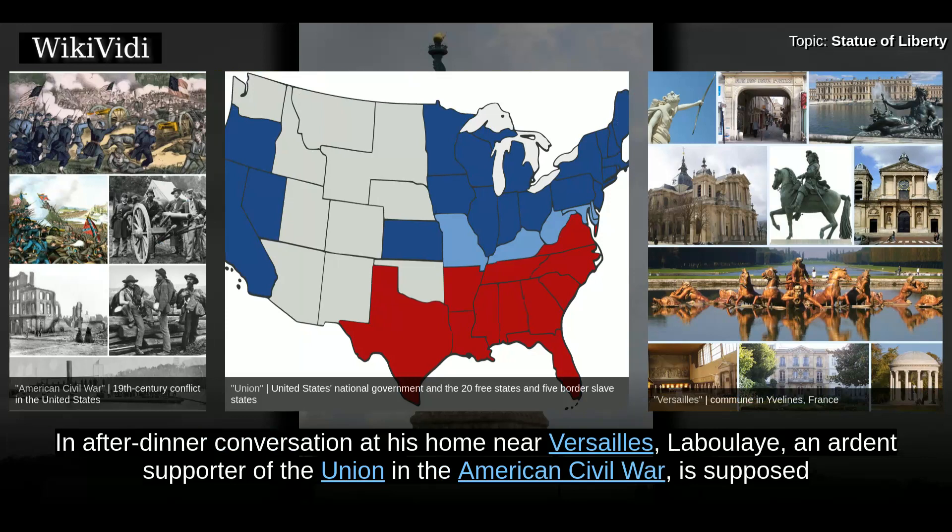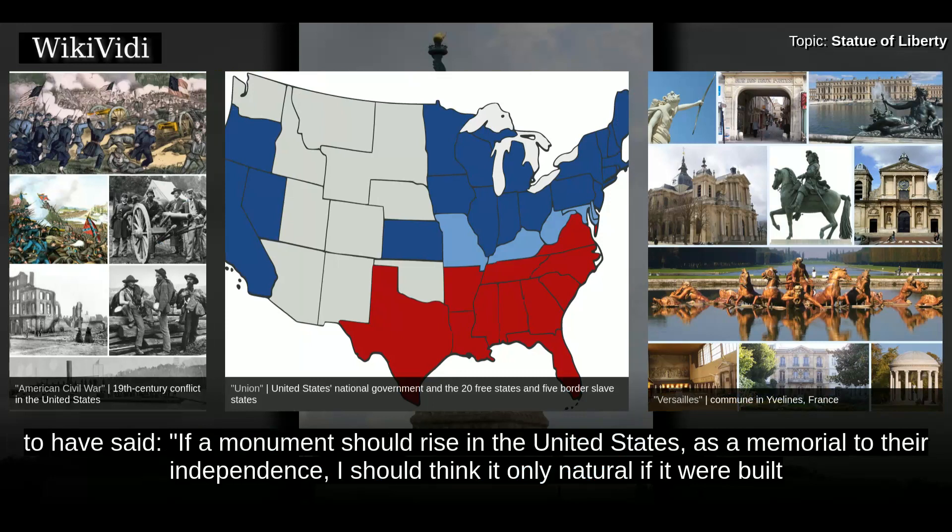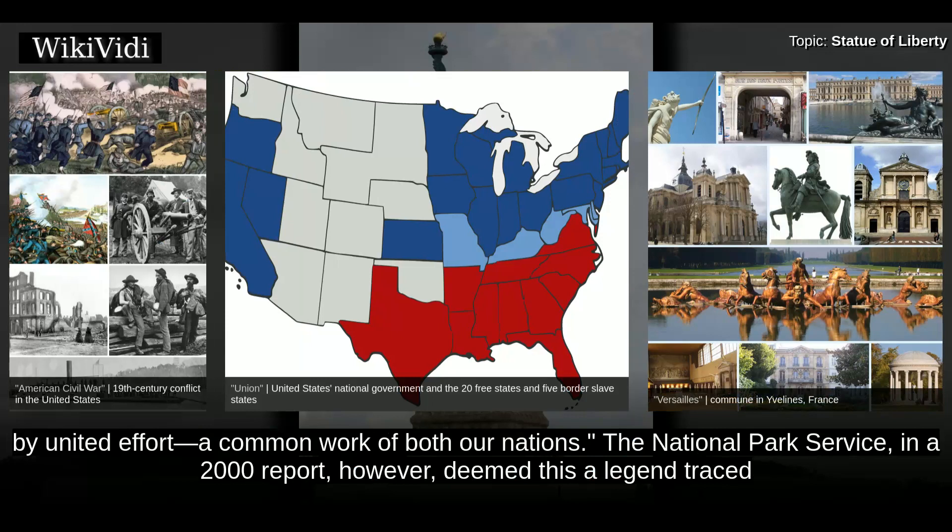In after-dinner conversation at his home near Versailles, Laboulaye, an ardent supporter of the Union in the American Civil War, is supposed to have said: 'If a monument should rise in the United States as a memorial to their independence, I should think it only natural if it were built by united effort, a common work of both our nations.'